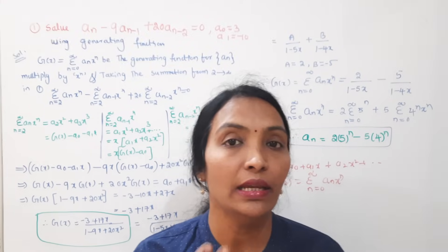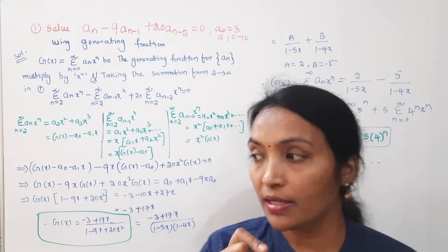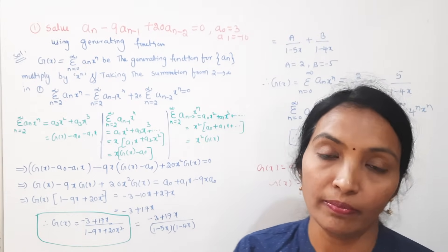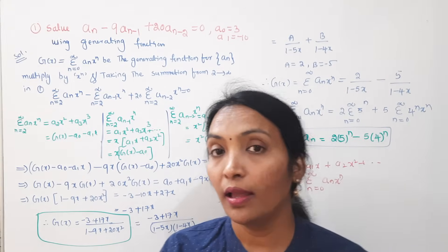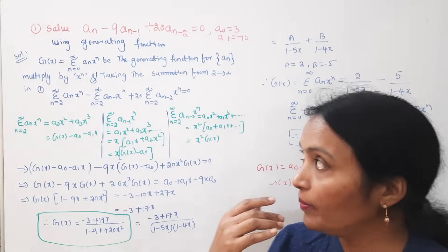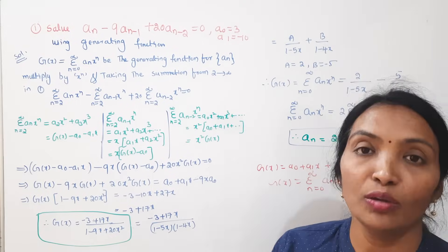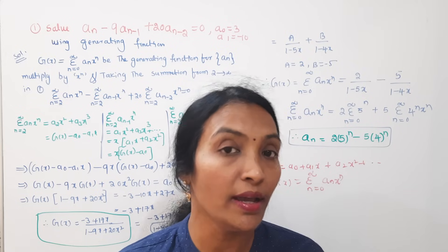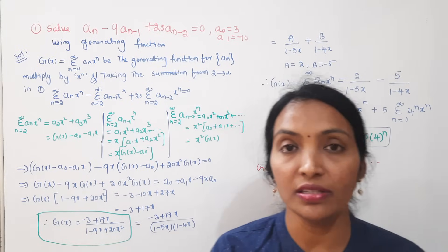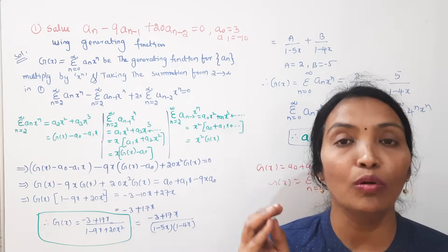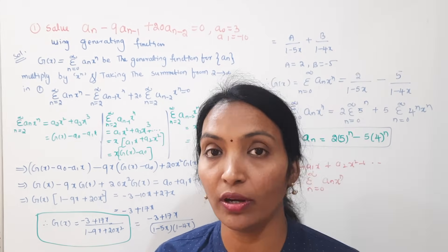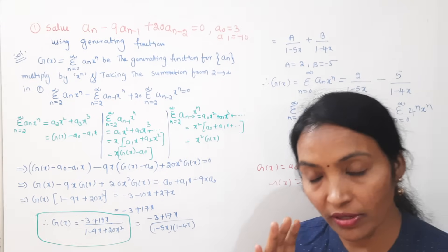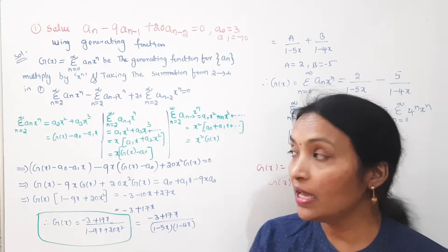This is the generating method, just like the recurrence relation. I will mention the generating function. If you don't have initial values, it is better to go for the generating function. I will explain this method.